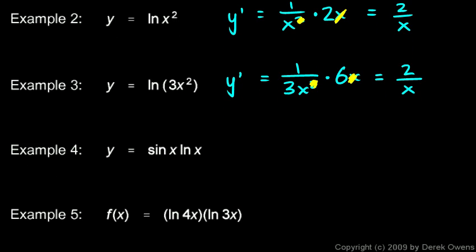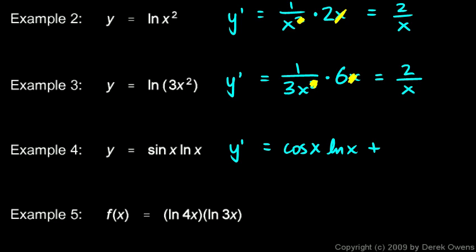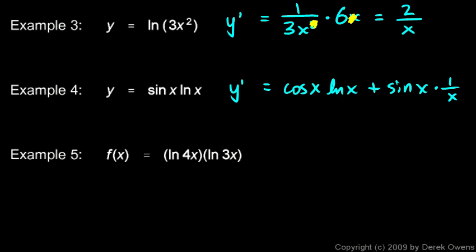Example 4: y equals sin(x) times the natural log of x — this is an application of the product rule. y-prime equals the derivative of sin(x) times ln(x) plus sin(x) times the derivative of ln(x). That gives cosine(x) times ln(x) plus sin(x) times one over x, which can be written as cosine(x)·ln(x) plus sin(x) over x.